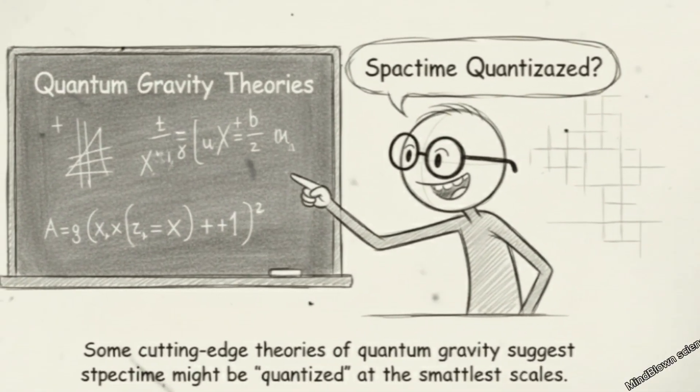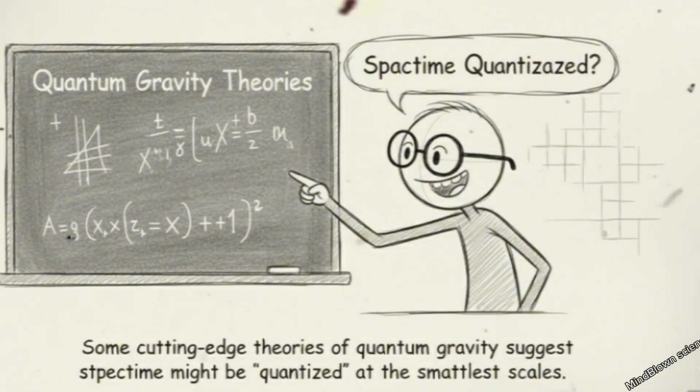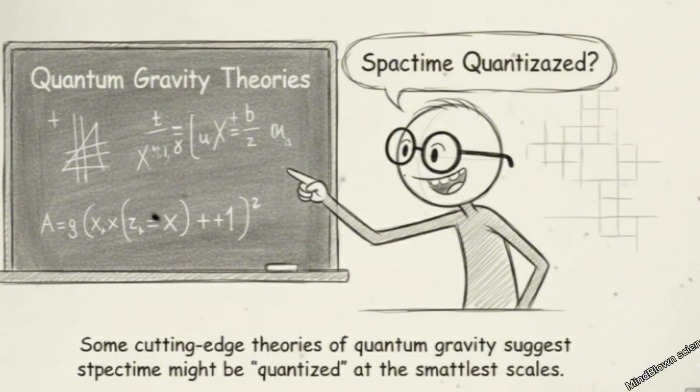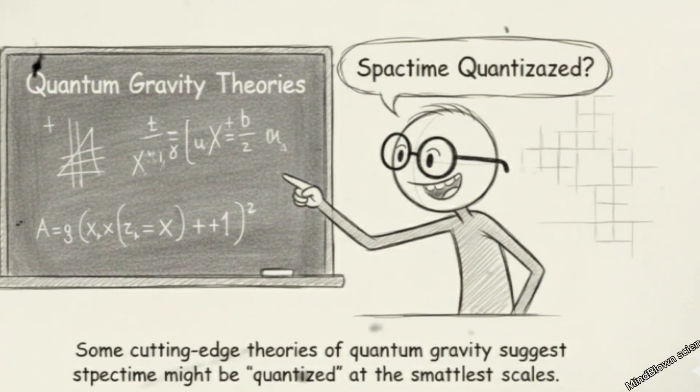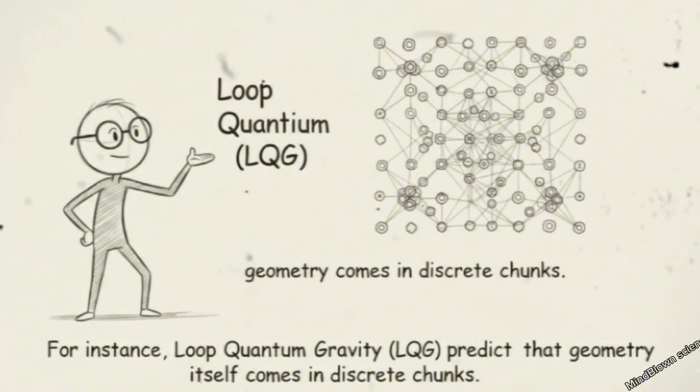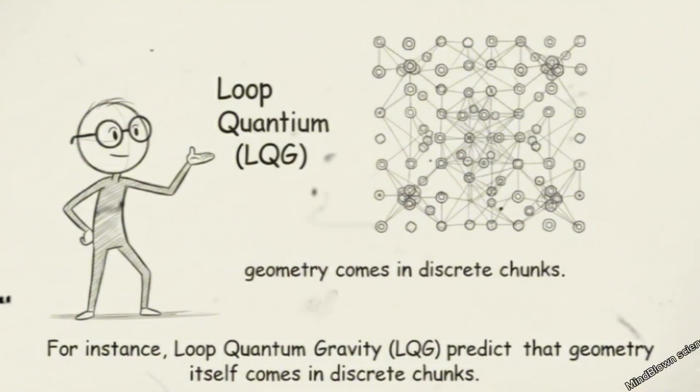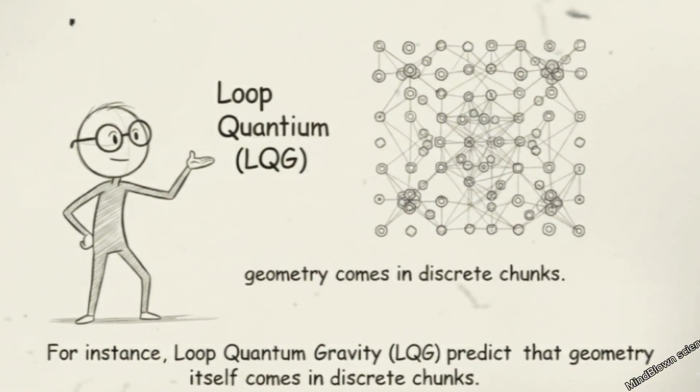Discrete spacetime: the Lego blocks. Quantum gravity ideas. Some cutting-edge theories of quantum gravity suggest spacetime might be quantized at the smallest scales. For instance, loop quantum gravity (LQG) predicts that geometry itself comes in discrete chunks.